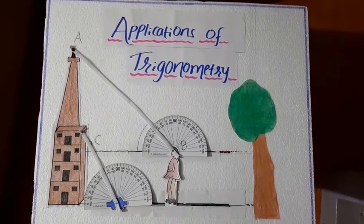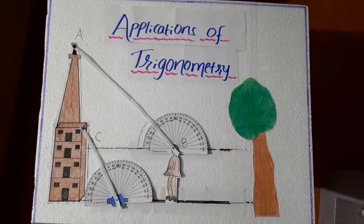We know that there are six trigonometrical ratios. And they are sin, cos, tan, cosec, sec, cot.